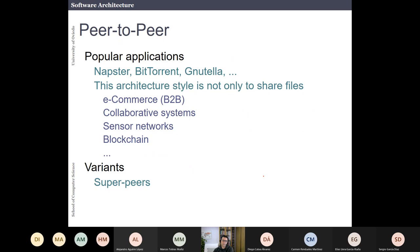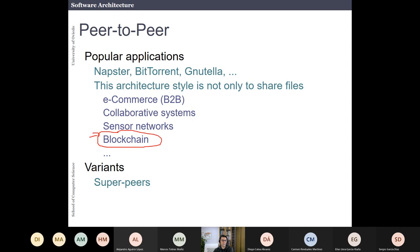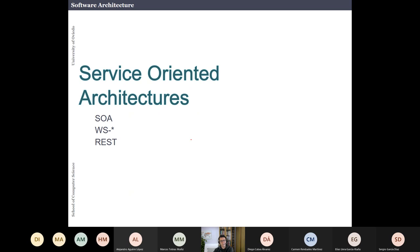Applications of peer-to-peer include blockchain, which is very popular today, sensor networks, collaborative systems, e-commerce, and older examples like Napster and BitTorrent. There is also the super-peer variant where some peers have more rights than others.